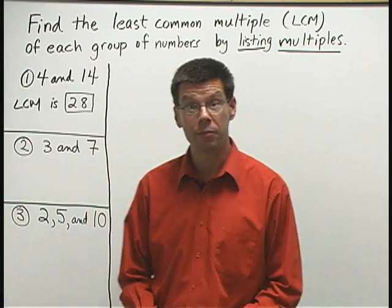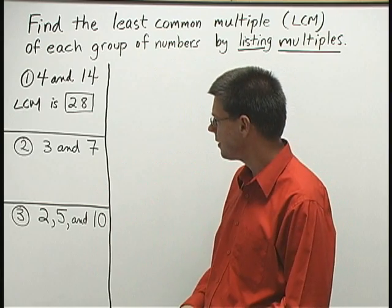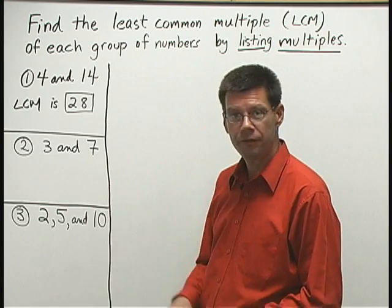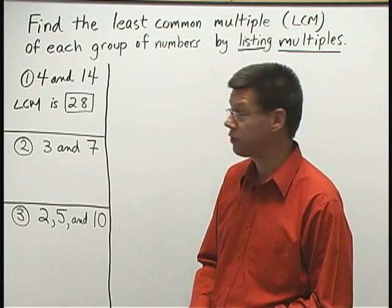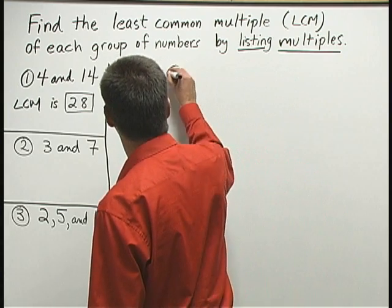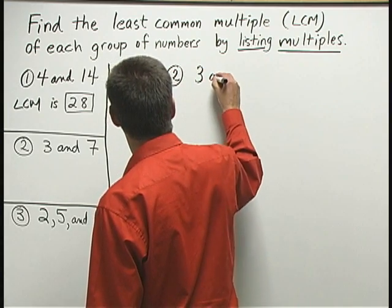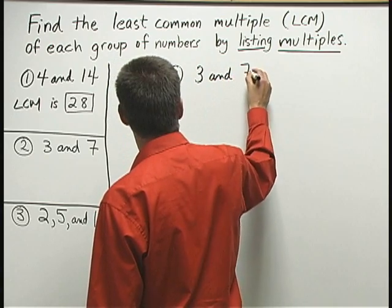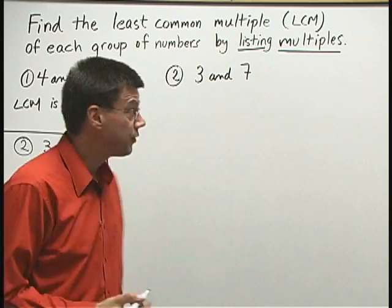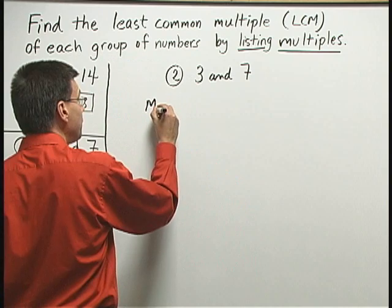Let's move on to our second problem, where we're going to find the least common multiple of 3 and 7 by listing multiples. Number 2: 3 and 7. Now, I'm going to start by listing some multiples of 3.